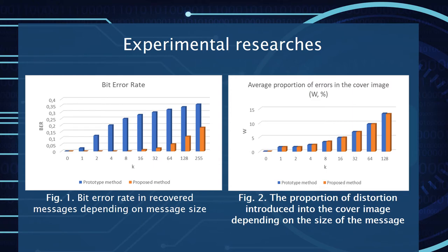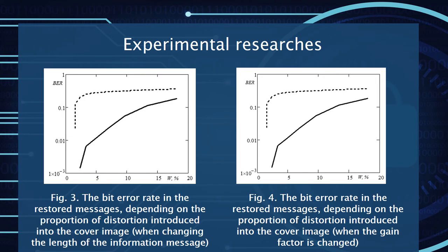This slide presents our experimental research. Fig 1 shows the bit error rate in the cover message depending on the message size. Fig 2 shows the proportion of distortion introduced into the cover image depending on the size of the message. Fig 3 shows the bit error rate in the restored message depending on the proportion of distortion introduced into the cover image when changing the level of the information message. Fig 4 shows the bit error rate in the restored message depending on the proportion of distortion introduced into the cover image when the gain factors change.